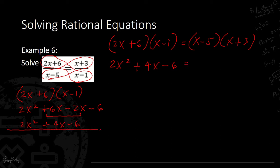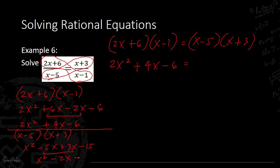For the right side, FOIL (x − 5)(x + 3): x times x gives x squared; x times 3 gives 3x; negative 5 times x gives minus 5x; negative 5 times 3 gives minus 15. Combining similar terms: 3x minus 5x gives minus 2x. So the right side simplifies to x squared minus 2x minus 15.